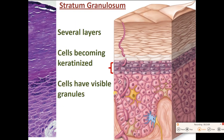The next layer going superficially is the stratum granulosum. The cells are getting keratinized here, and in the process of making keratin, you end up with little vesicles containing the precursors of keratin, which are granular — making the cells look granular, hence the name stratum granulosum. If you see the granules, you know the stratum spinosum is just below, and either the stratum lucidum or corneum is just above, depending on thick or thin skin.